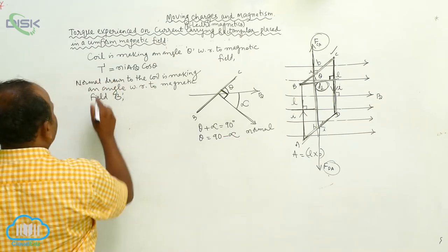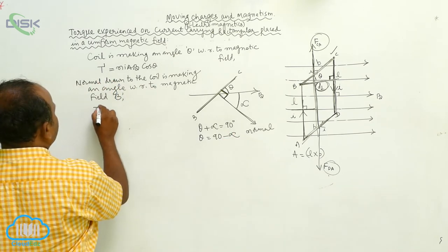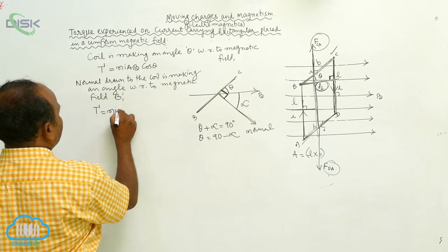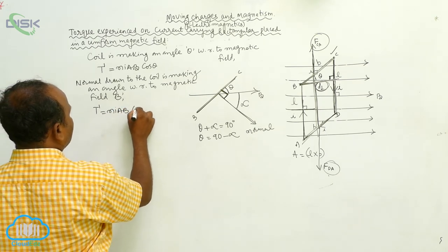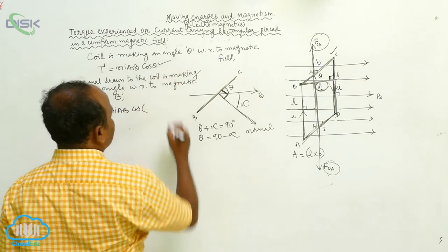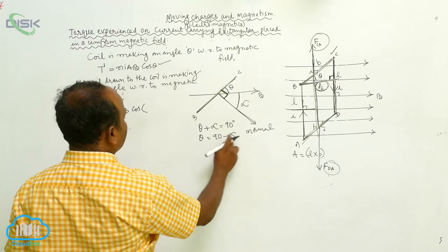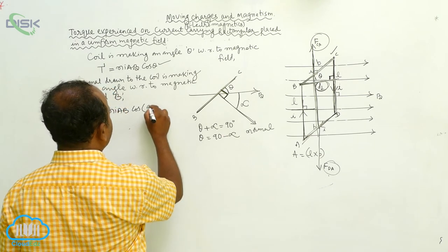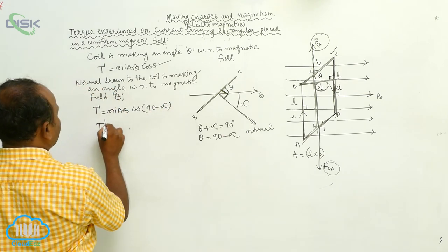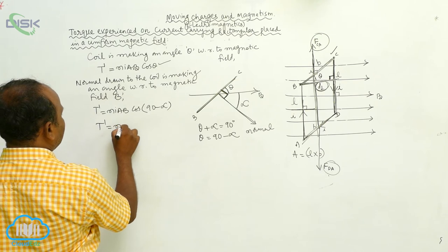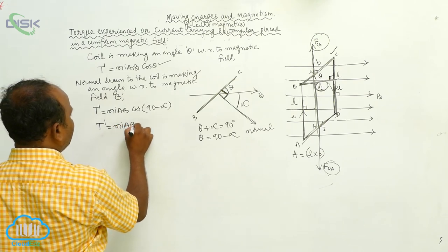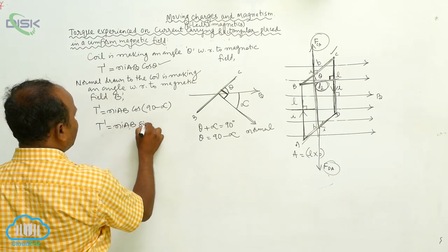Therefore tau is equal to NIAB cos(90 minus alpha), which gives tau is equal to NIAB sin alpha.